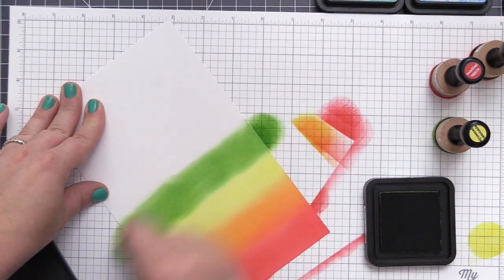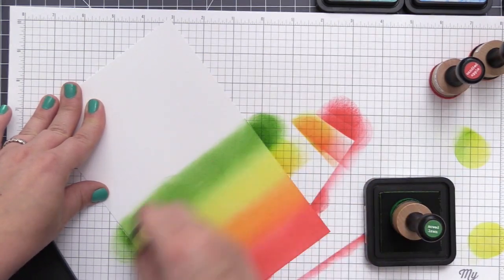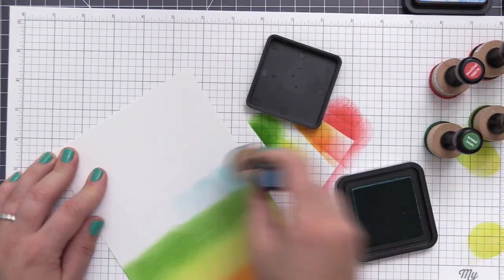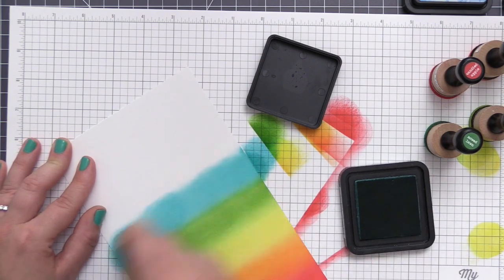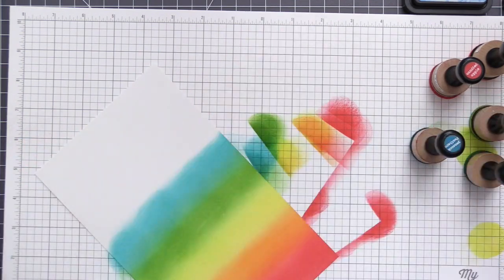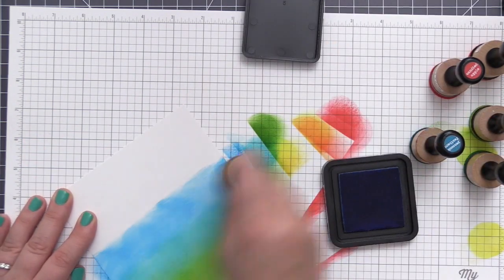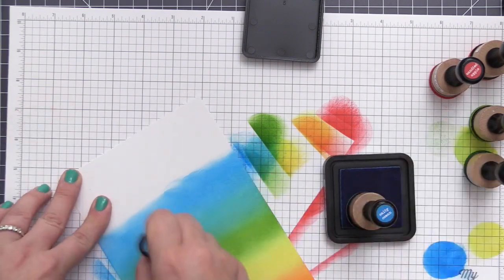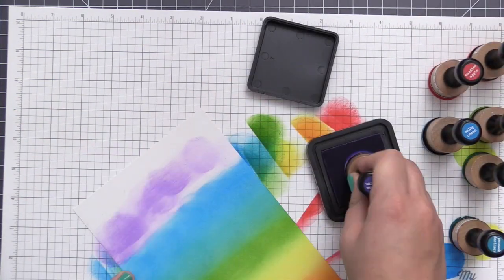So to start off, I have a big panel of white cardstock here, and I'm just adding ink to this entire panel using Distress Inks. I'm starting at the bottom and going in rainbow order and just adding each of the different colors and going back and forth with the different blending tools to make sure I have all of this color blended.